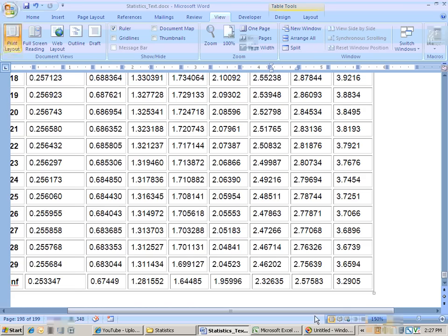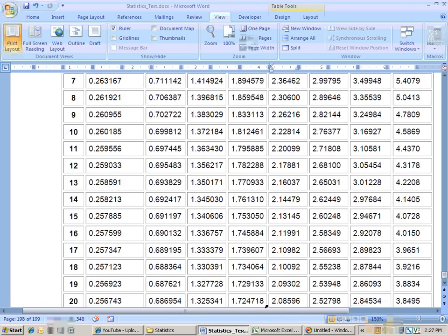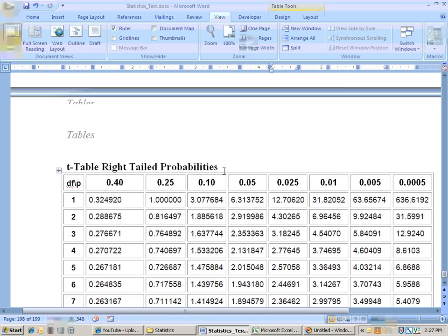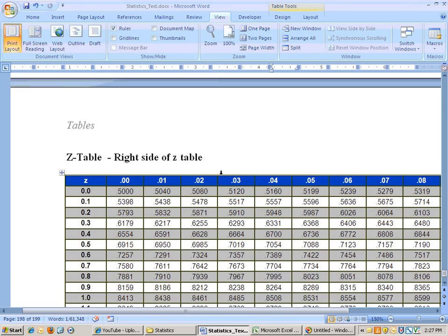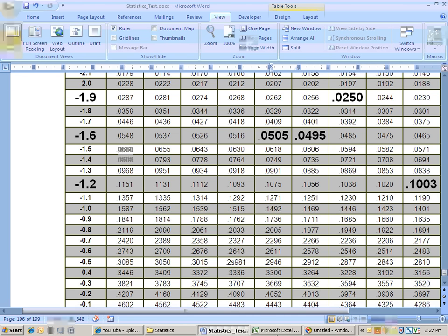In addition, so is your t-table right here, right-tailed probabilities, and also your z-table is on two pages here in the back of the book. So we'll stop this section right there and we'll see you next time.